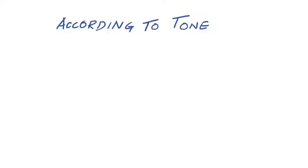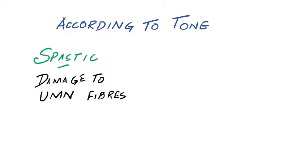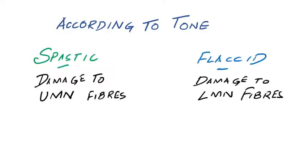According to the predominant tone of the muscles, paraplegia can be spastic or flaccid. Spastic paraplegia is a feature of upper motor neuron type damage, while damage to the lower order neurons — that is anywhere from the anterior horn cells and below — will cause flaccid paralysis.